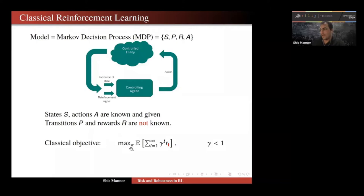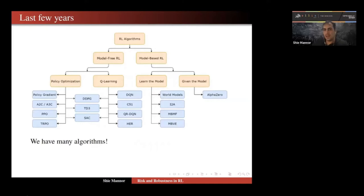The classical objective that has been studied for over 60 years is the expected discounted return. You want to find the policy π that maximizes your expected cumulative discounted return. My most favorite quote is that we know this is a model, we know it's not correct, but we hope that it's somewhat useful. In the last few years, we saw lots of RL algorithms.